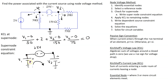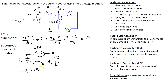Going from plus to minus is a voltage drop, so we have a positive sign, giving us plus 25. Then going from plus to minus is another voltage drop, so we get plus v2 equals zero. This gives us the super node constraint equation.